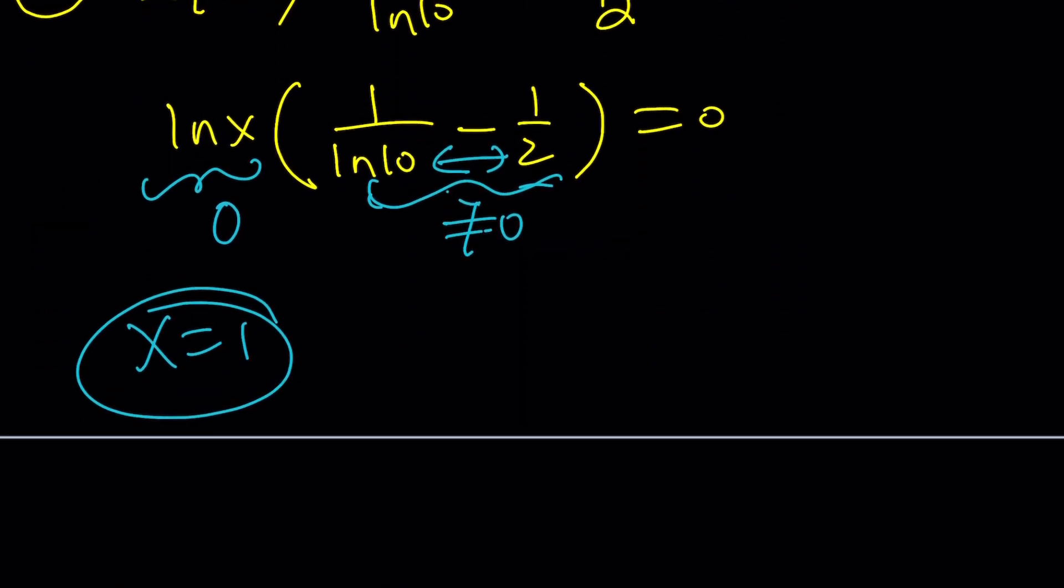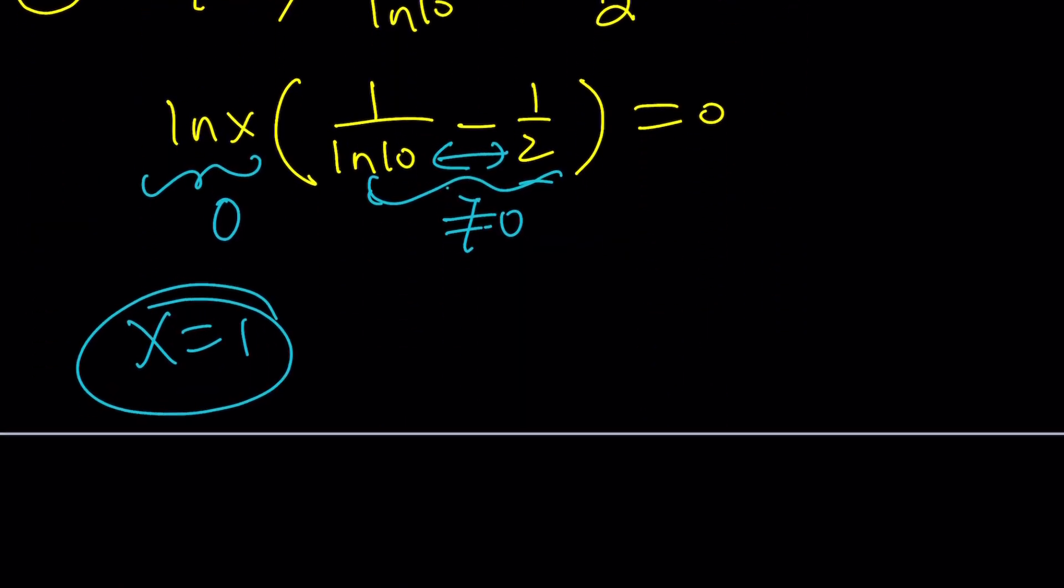So x equals 1 is the only solution that comes out of this. But guess what? This is only if x is real. So we're going to look at two things. First, the results from Wolfram Alpha, which was a little surprising for me when I first saw them. I'm like, what? Are you serious? Let me share with you.